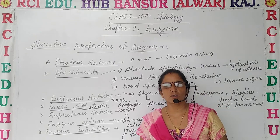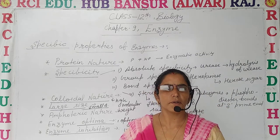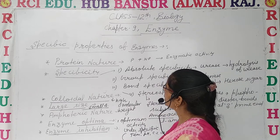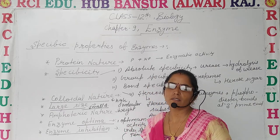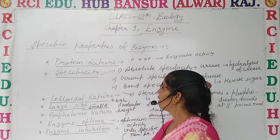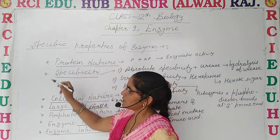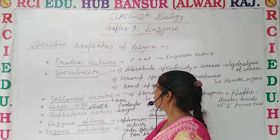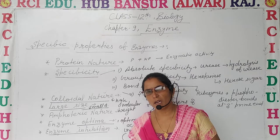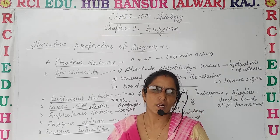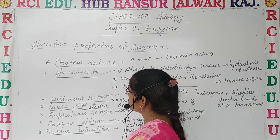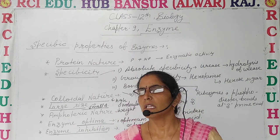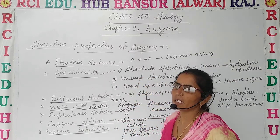We will discuss the structure of enzymes as well as a simple introduction of enzymes. Enzymes have several properties; let's discuss them one by one. First, as we know, mostly enzymes are proteinaceous in nature — it means they consist of protein. Both the protein and non-protein parts are responsible for enzymatic activities. So this is the first specific property of enzymes: they consist of protein, making them specific and effective for their enzymatic activities.